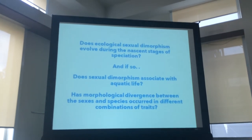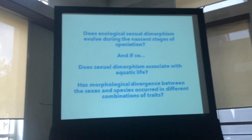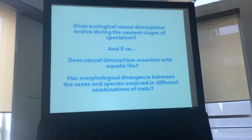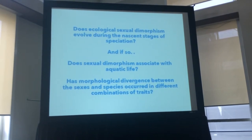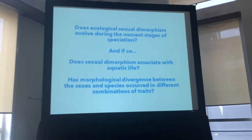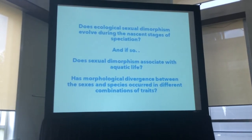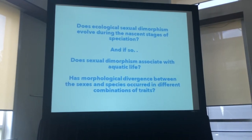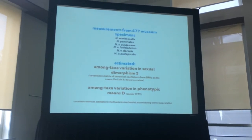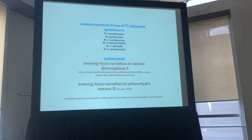I am asking three questions. First, does ecological sexual dimorphism evolve during the nascent stages of speciation across subspecies of Notophthalmus viridescens? If so, does the degree of sexual dimorphism associate with adaptation to aquatic life? And finally, if both sexual dimorphism and ecological speciation are evolving at the same time, do they occur in different combinations of traits, as theory predicts? To address these questions, I compiled measurements from museum specimens for both sexes across all species and subspecies of Notophthalmus, measuring the same traits previously shown to be under ecological selection between the sexes.